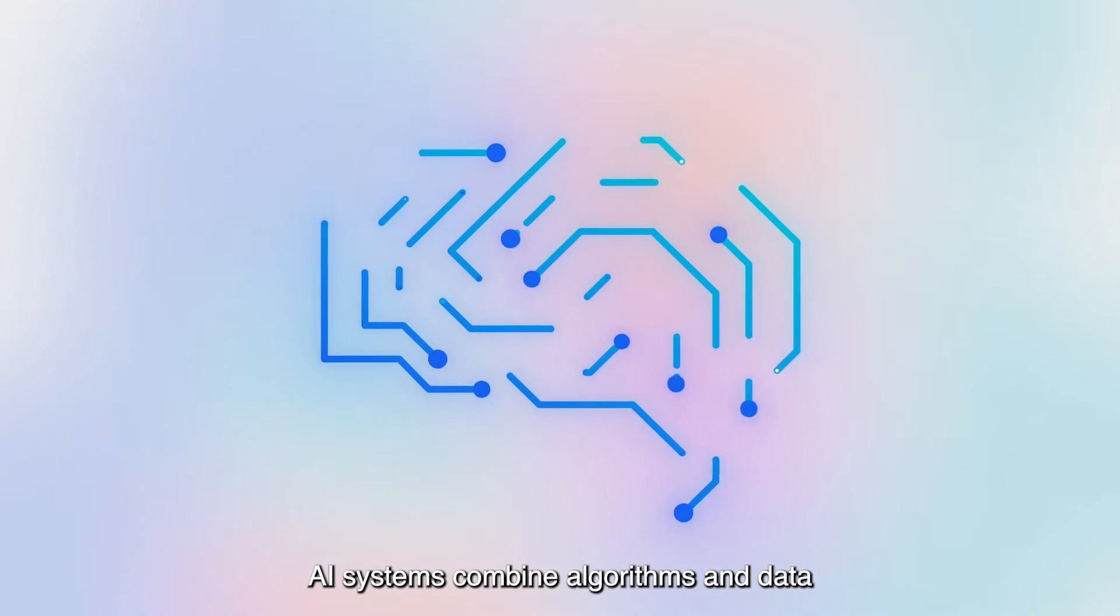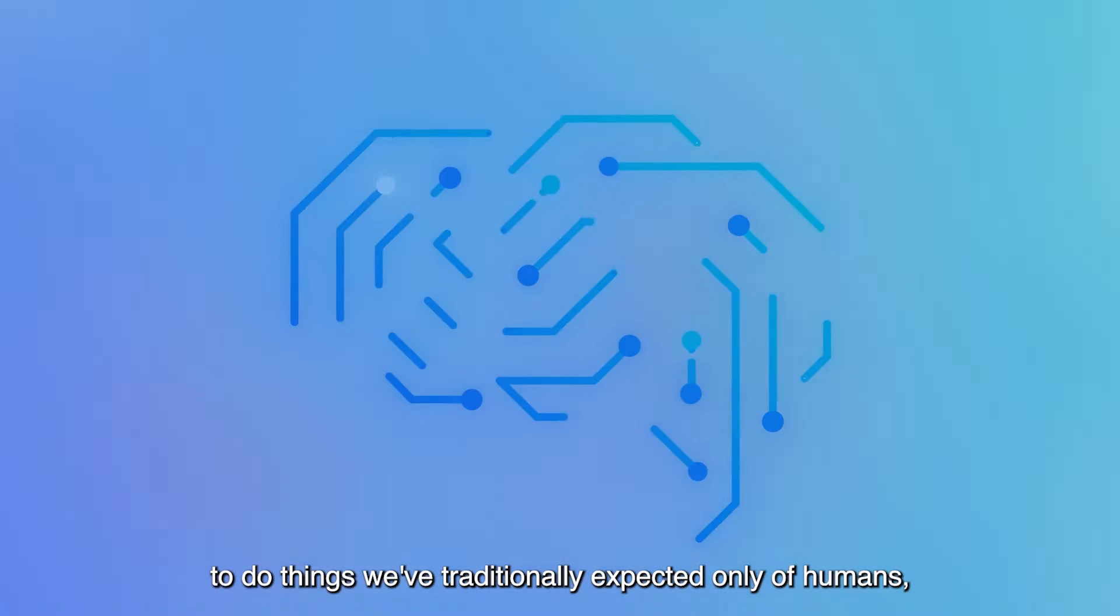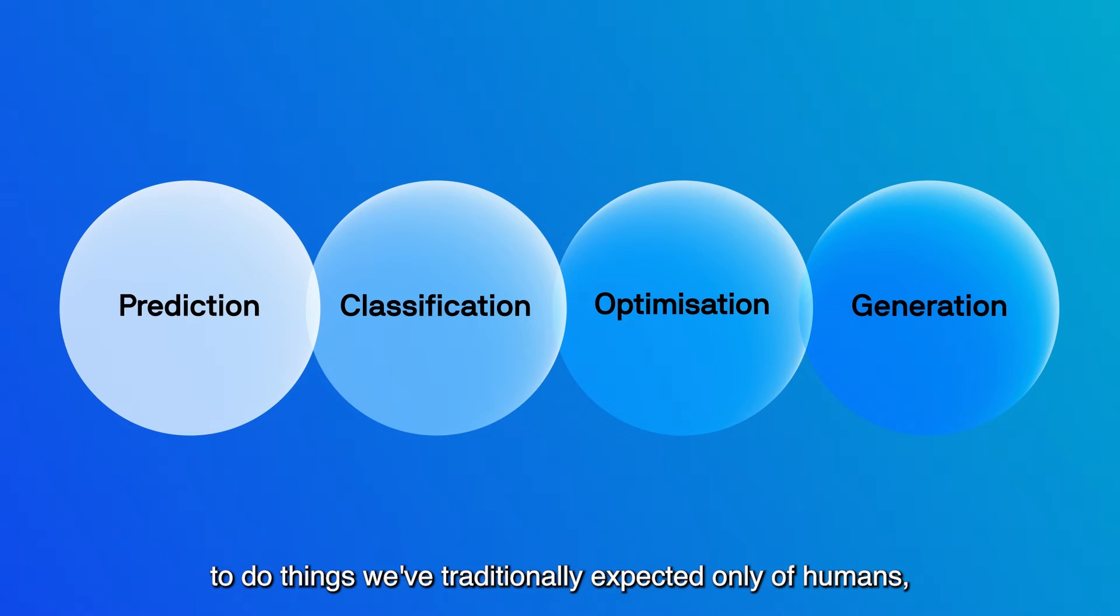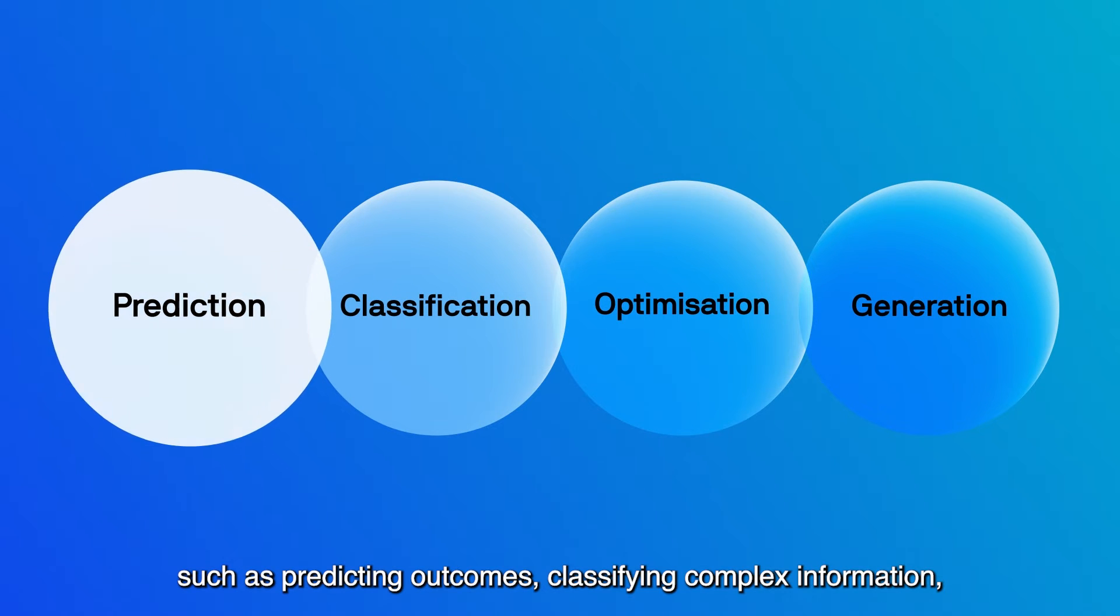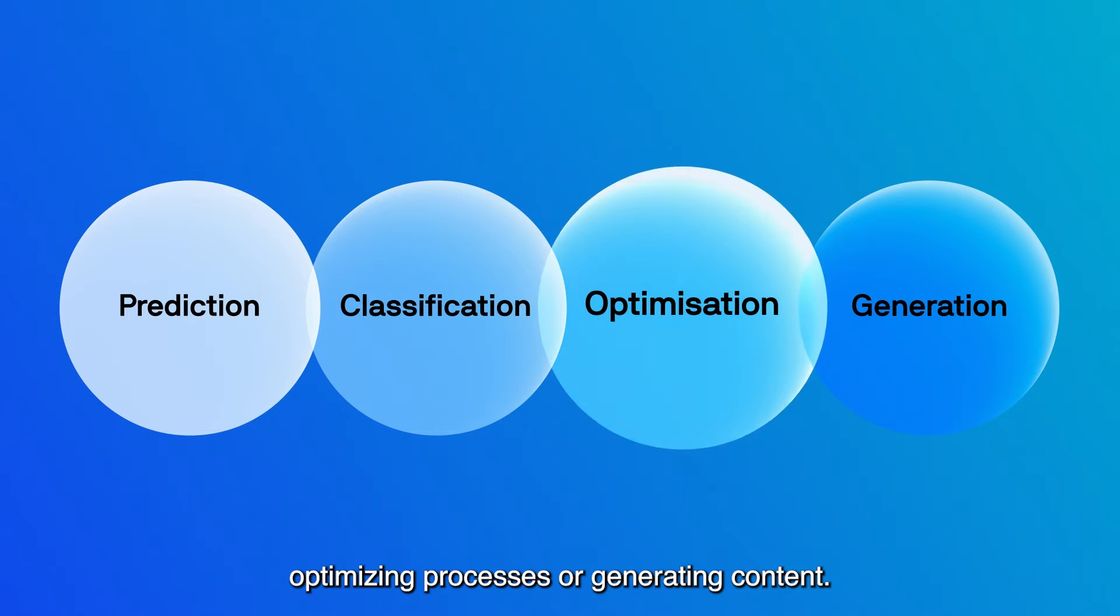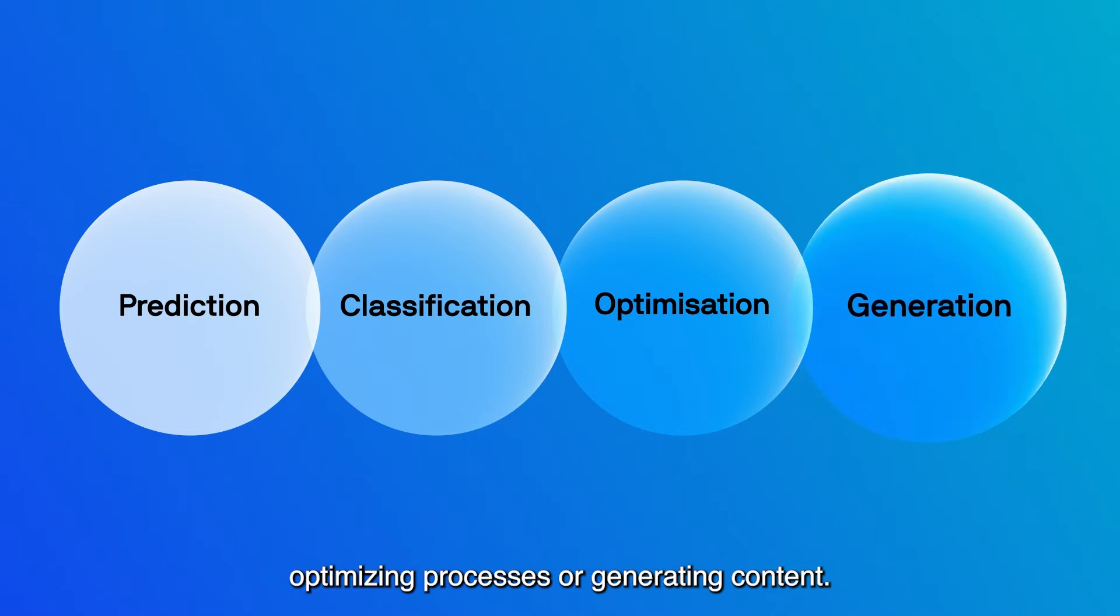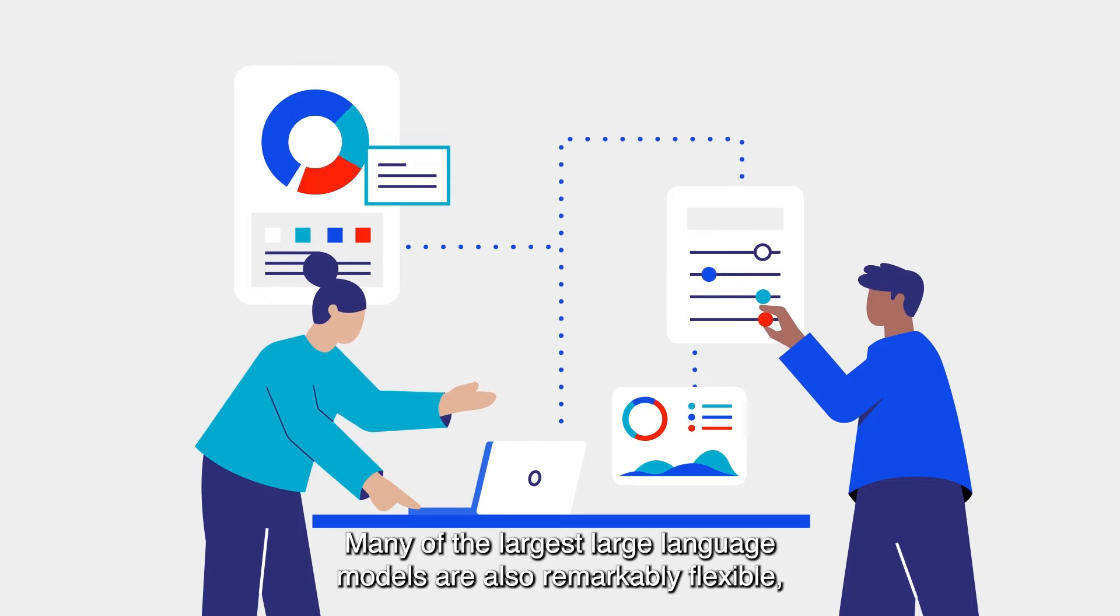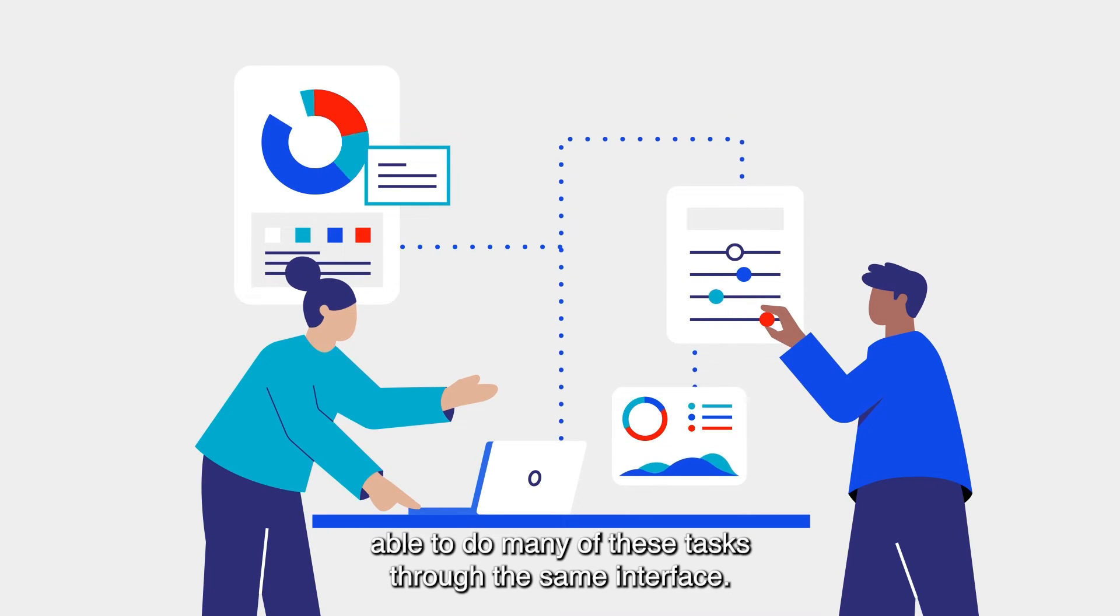AI systems combine algorithms and data to do things we have traditionally expected only of humans, such as predicting outcomes, classifying complex information, optimising processes, or generating content. Many of the largest large language models are also remarkably flexible, able to do many of these tasks through the same interface.